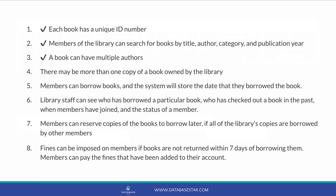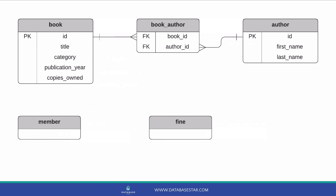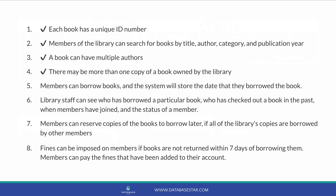Requirement 4 says there may be more than one copy of a book in the library. So each book would need a number of copies stored for it, representing the number that the library owns. We won't need to store the number they have in stock, because this can be calculated based on the number they own and the books that have been borrowed. We have a new field called copies_owned in the book table. Requirement 5 is about borrowing books — a member can borrow a book and the date of the borrowing is stored. We have two concepts here: a member and a record of the books they've borrowed.